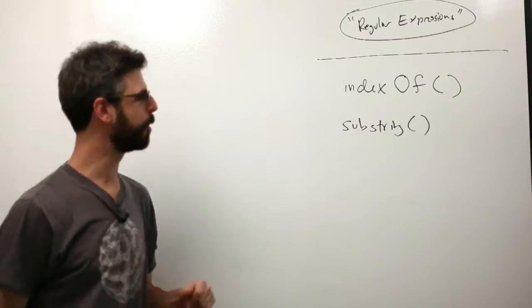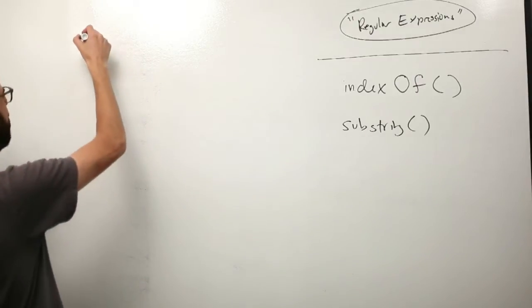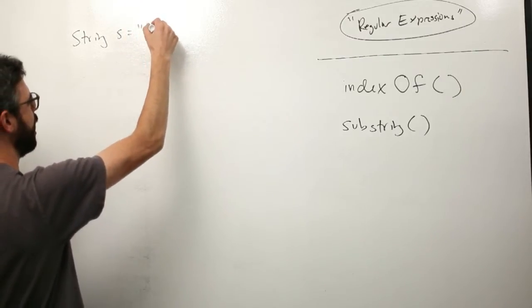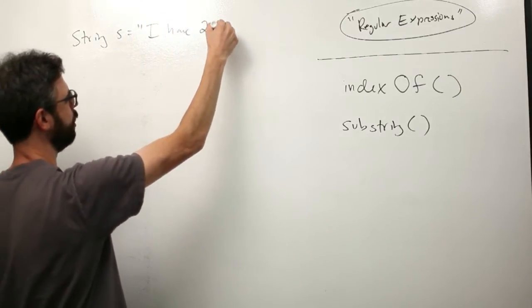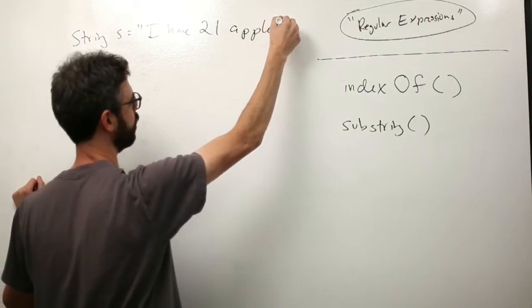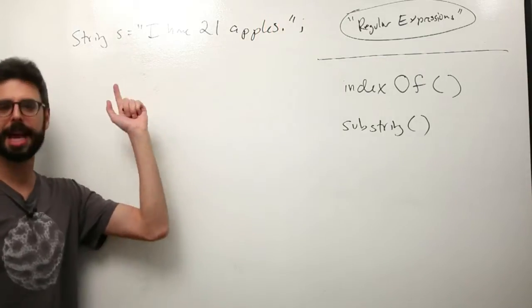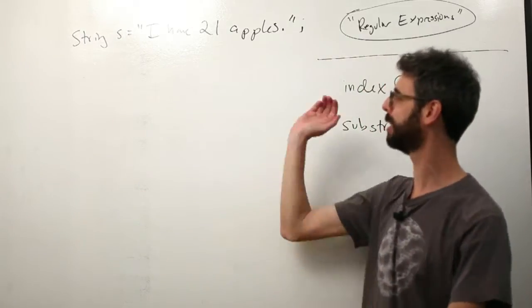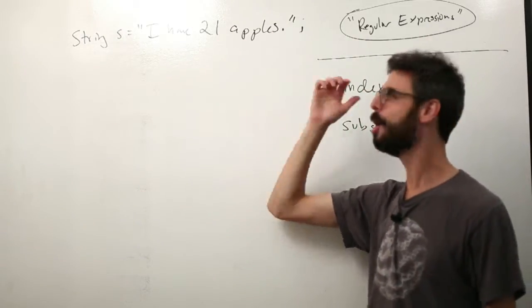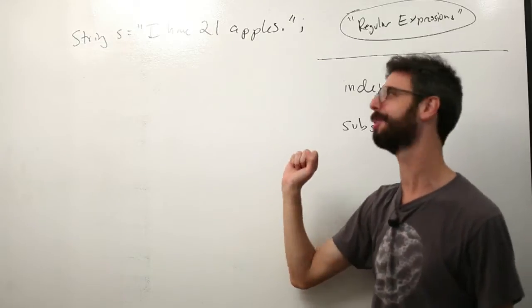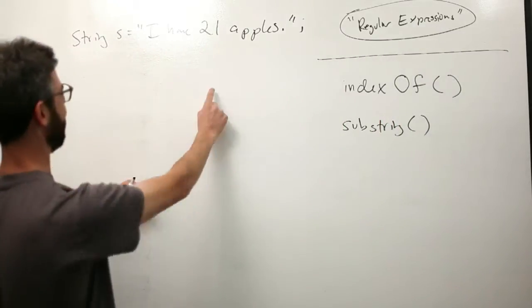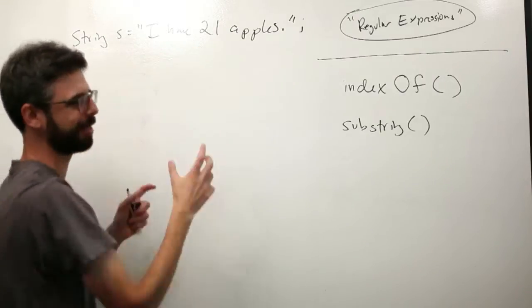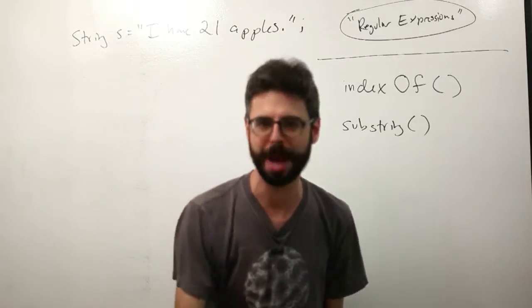So let's say we have a particular piece of text, a string s equals "I have 21 apples." And let's say, you know, you could think of the context of, oh, I go to a web page and every single time I go to that web page it says I have some number apples. Well, how would I pull only that number out? You know, the human being, us, we could just look at that and say, oh, it's right here, it's 21, it's the thing that's digits and it's in between have and apples and that's the number. But how do we do that programmatically?